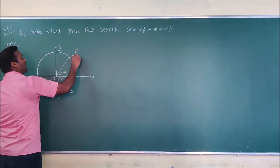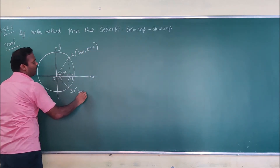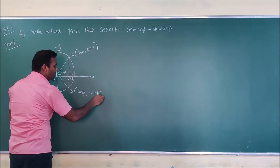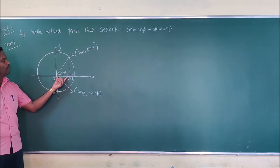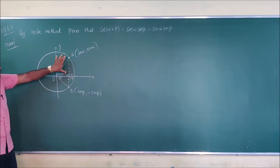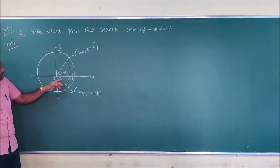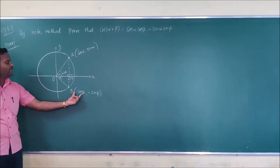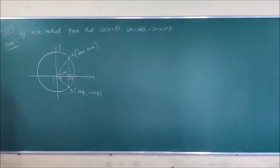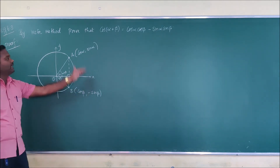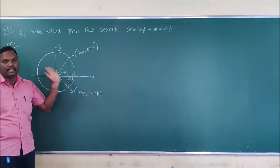When writing the coordinates, point A has coordinates (cosα, sinα) and point B has coordinates (cosβ, -sinβ), since B lies in the negative y-axis region. The distance OL is cosα and LA is sinα. Similarly, OM is cosβ and MB is sinβ, but with a negative sign since it lies on the negative side. We will write the vectors directly without proving the coordinates separately.